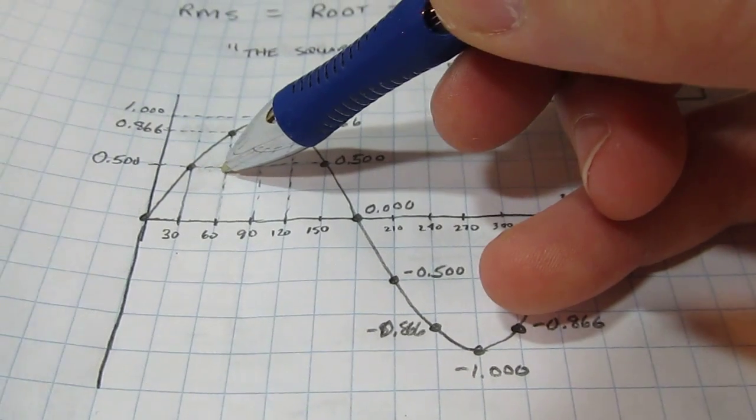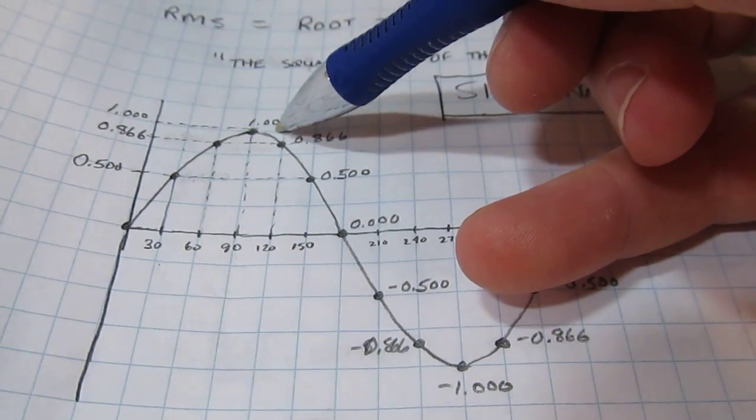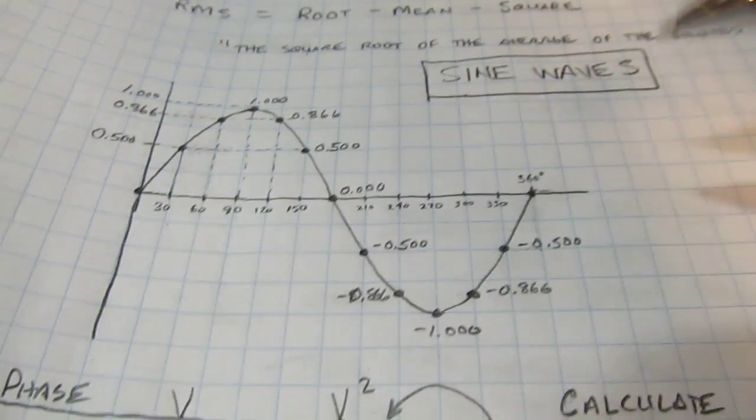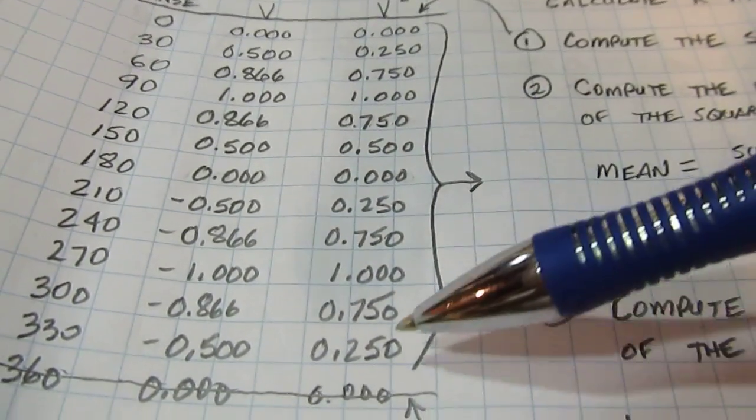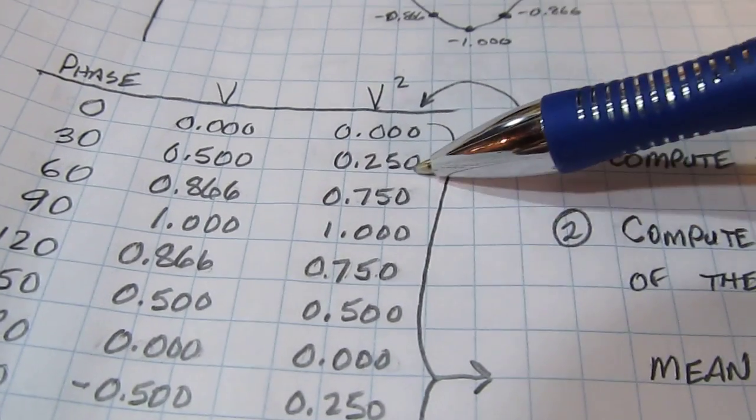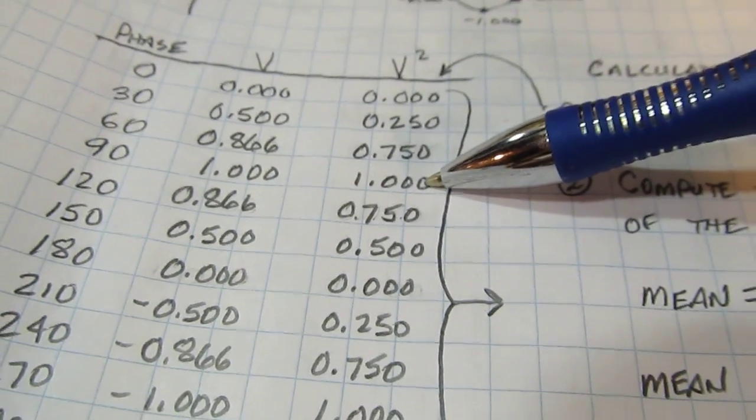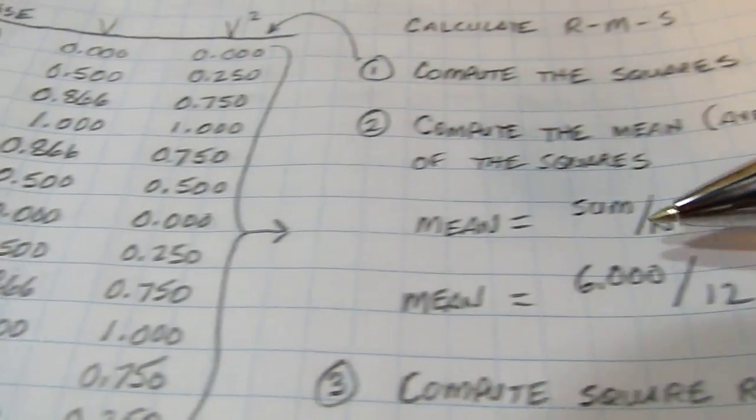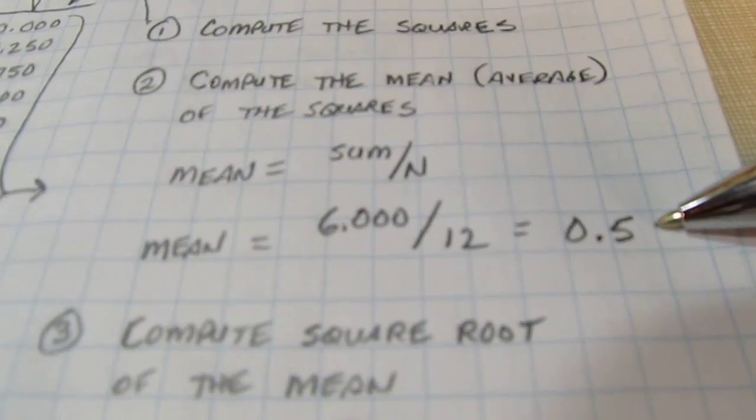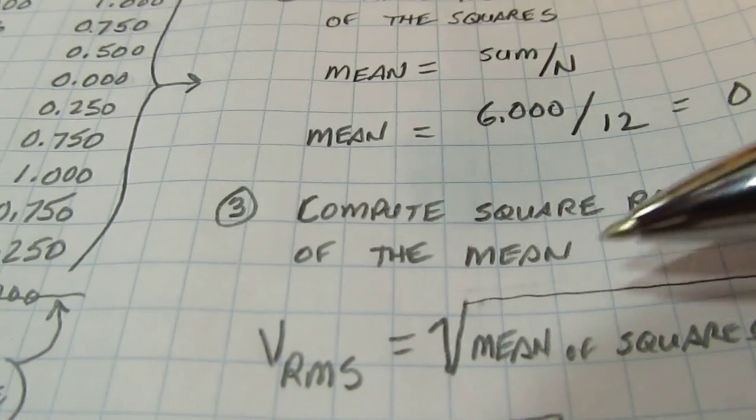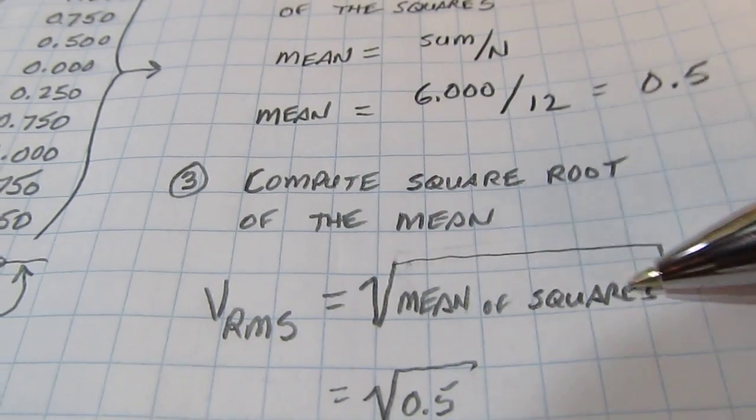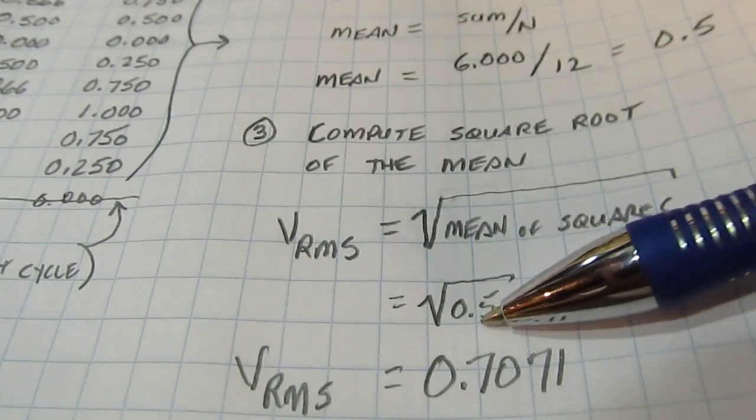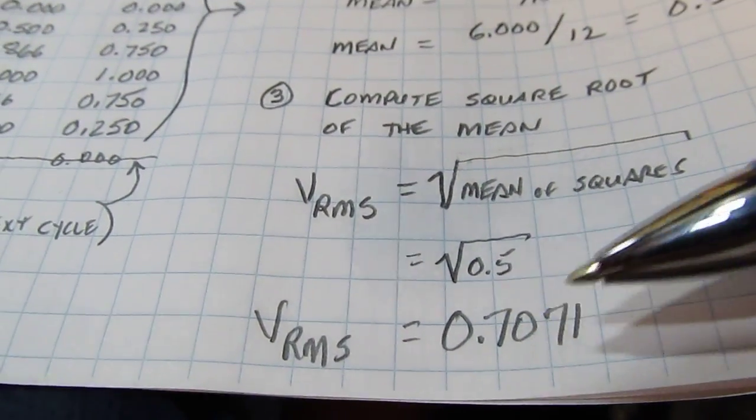We're going to include one complete cycle. As we go all the way through here, this last value holds to the end of that waveform. The next one is for the next cycle. So we're only going to include these first 12 values. If we add those up, it's actually pretty easy to see. 0.25 and 0.75, that's 1, plus another one is 2, 3, 4, 5, 6. So the total is 6. The mean of that would be 6 divided by the 12 points, or 0.5. Then we take the square root of the mean. So the RMS voltage is the square root of the mean of the squares, which is 0.5. So the square root of 0.5 is 0.707. There's our magical number.